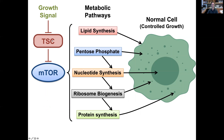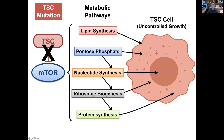What the TSC complex does is put a brake on mTOR. It prevents mTOR from doing this unless the cell receives a growth signal that inhibits the TSC complex, in order to activate mTOR and tell it to build cells through these metabolic pathways. When you lose the TSC complex in tuberous sclerosis complex, you get uncontrolled growth — uncontrolled activation of these metabolic pathways downstream of mTOR, leading to uncontrolled cell growth, even in the absence of a growth signal, because the TSC complex is disrupted.